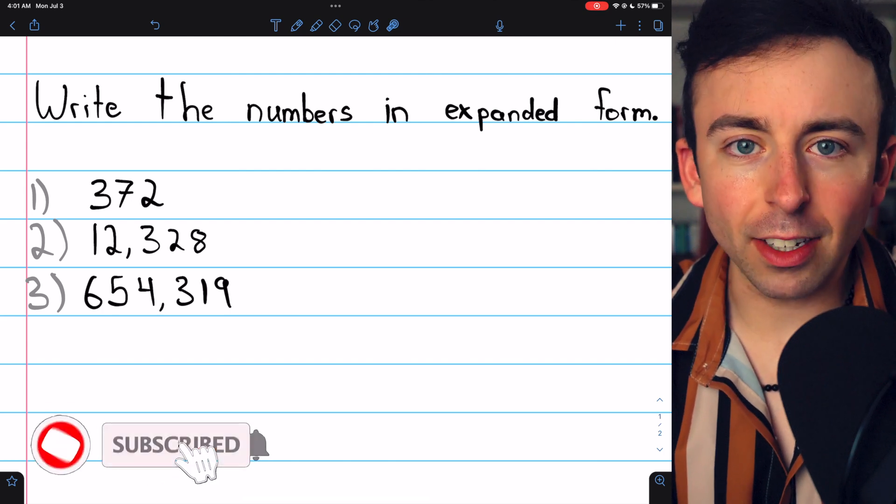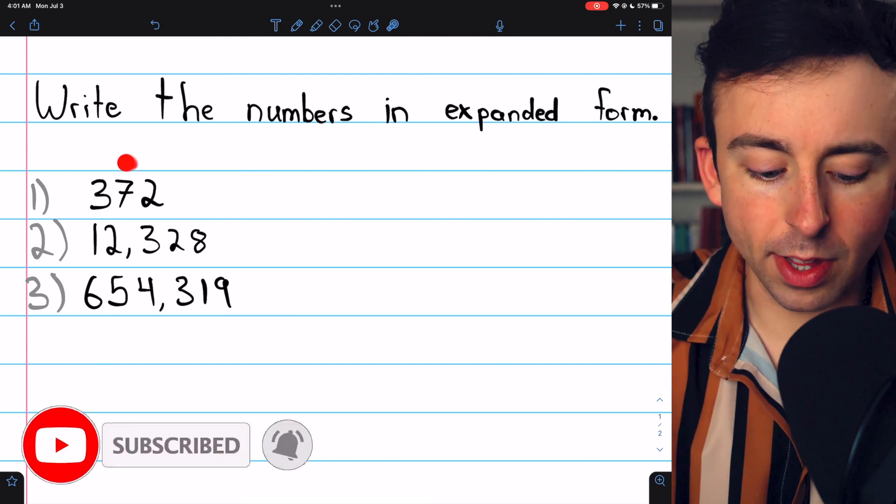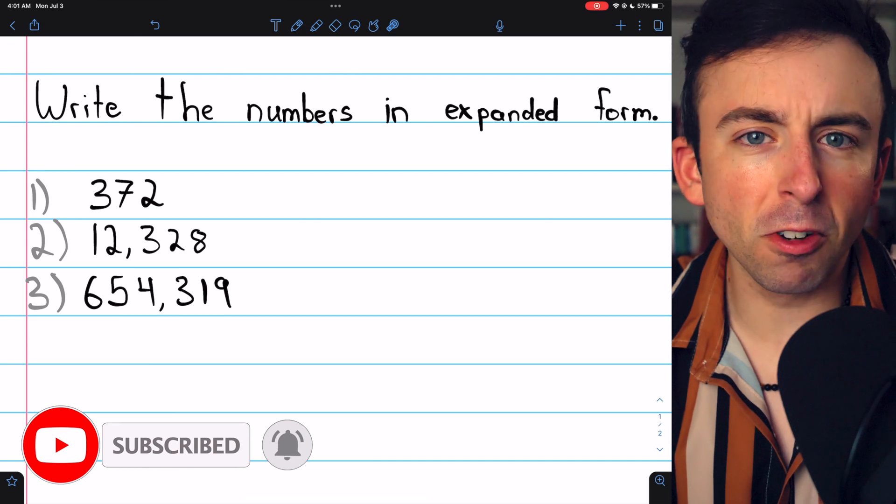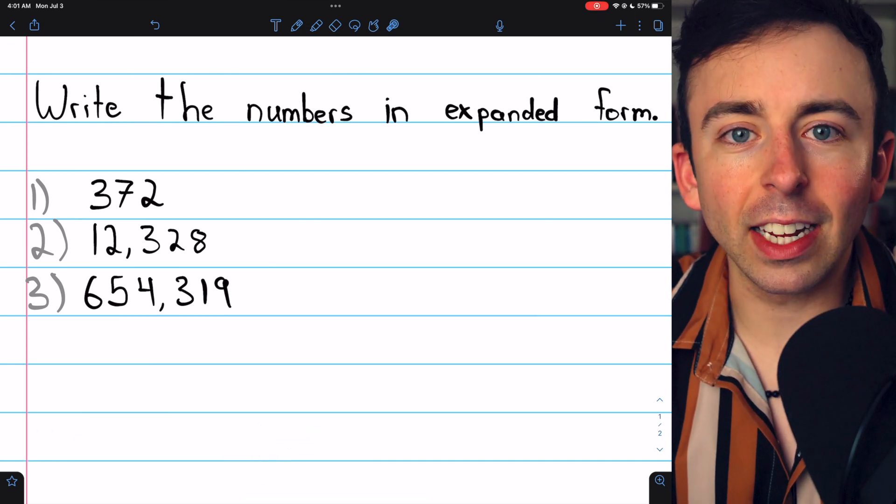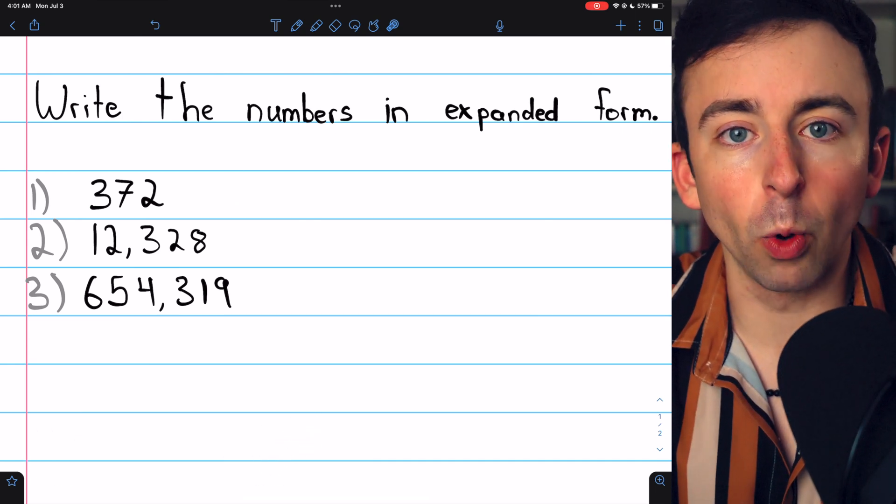Let's go over how to write numbers in expanded form. We're going to do these three examples. This is a great way to get a better understanding of how the place value system works.